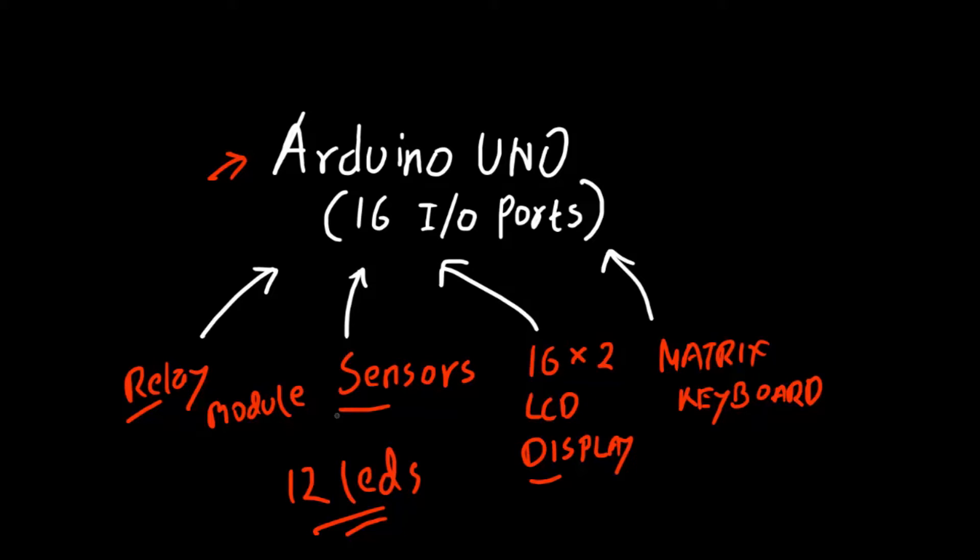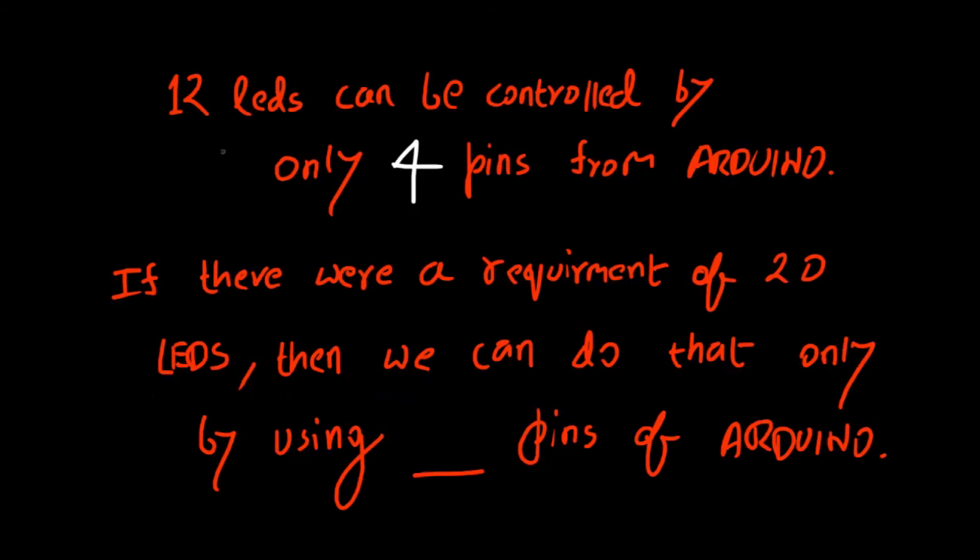In that kind of condition this Charlie Plexing concept can help you a lot. With Charlie Plexing you can control 12 LEDs by using only 4 input output ports from the Arduino. If you want to control 20 LEDs then you only need around 5 pins from your Arduino to control those 20 LEDs.